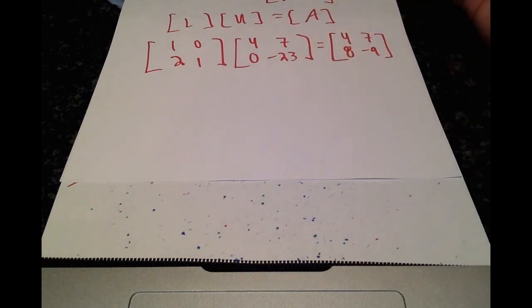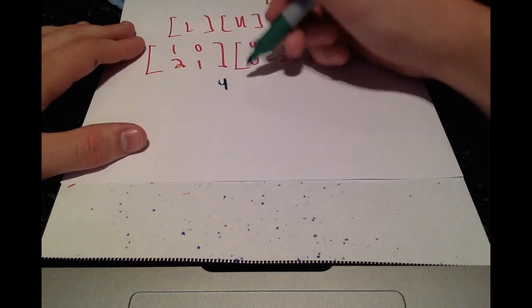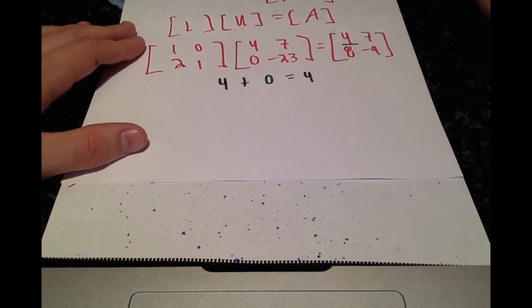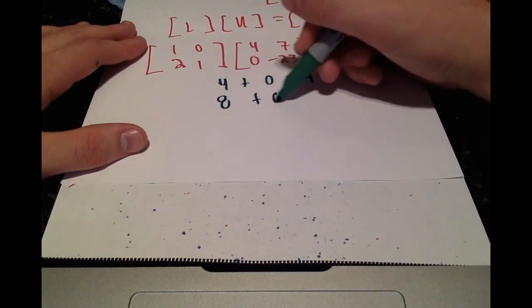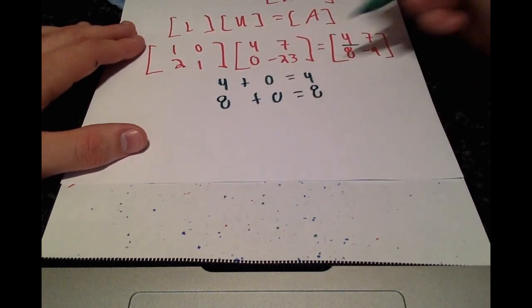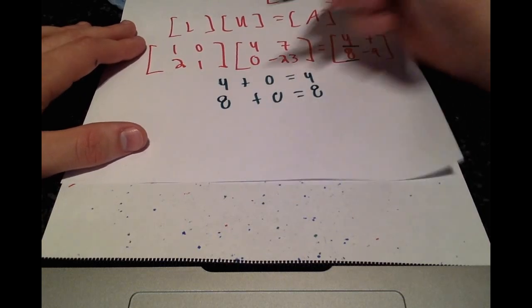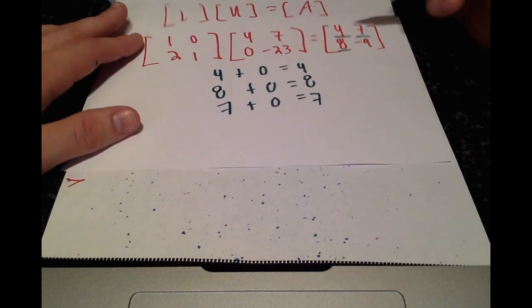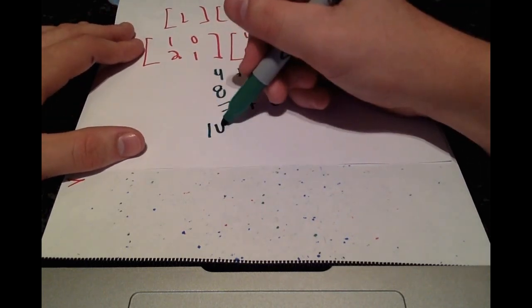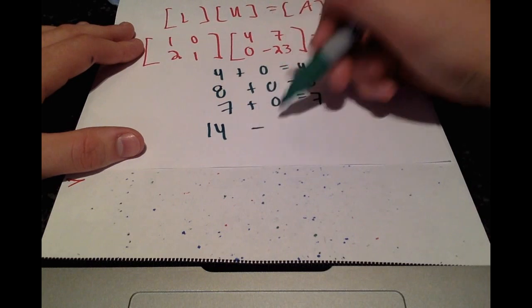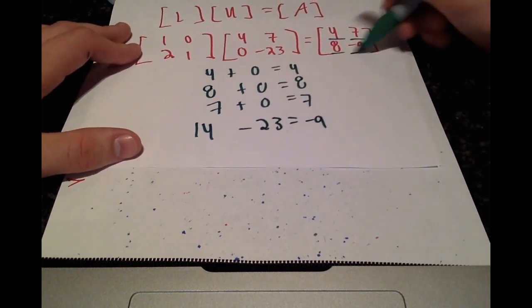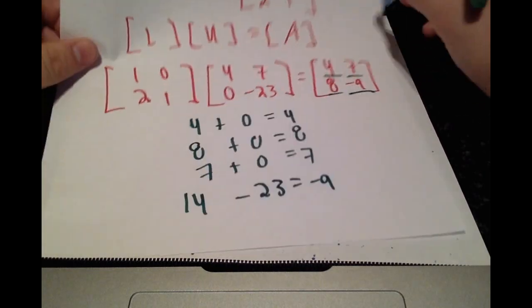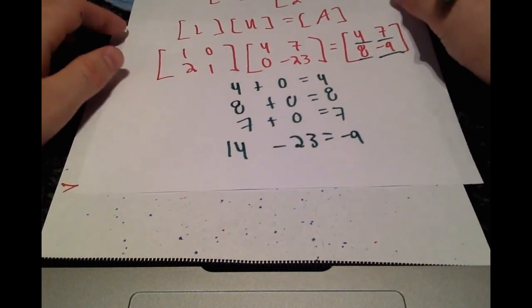And so just go term by term to check that this is correct. 4 plus 0 is 4, so that term's correct. 8 plus 0 is 8, so that's correct. 7 plus 0 is 7, that term's correct. and then our last term, 14 minus 23 is equal to negative 9, that term's correct. So L U equals A is verified and we have the correct values for L and U.